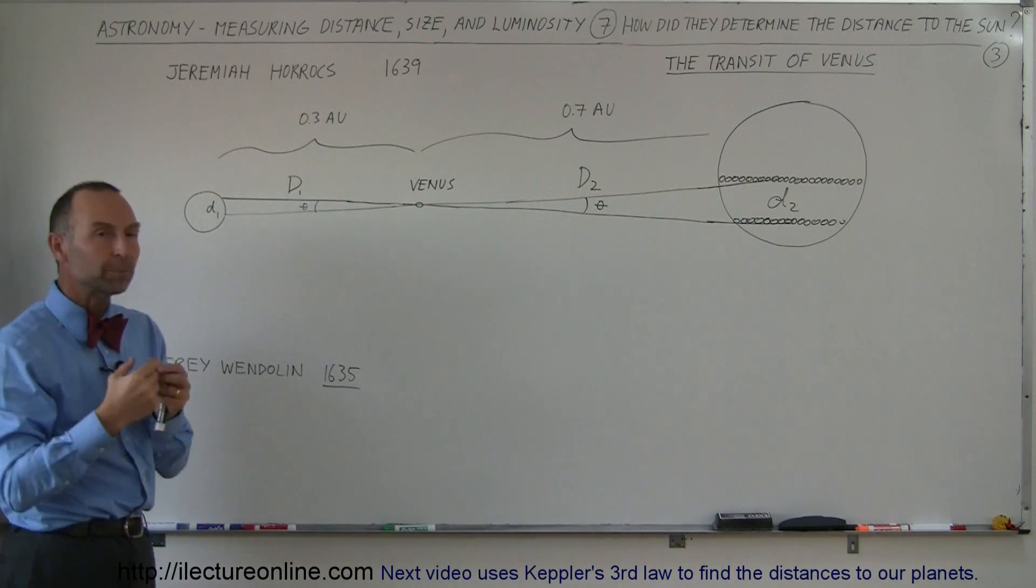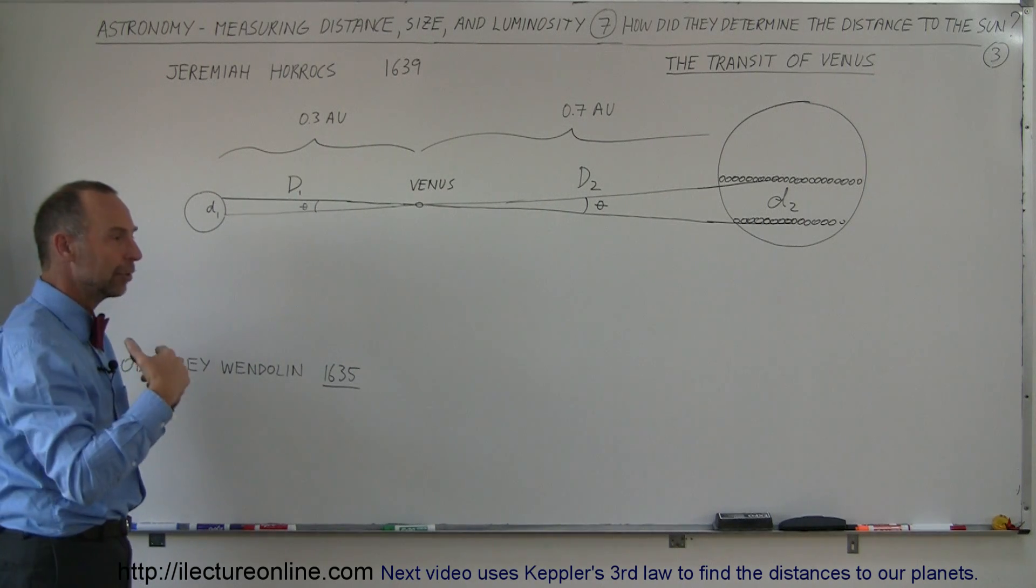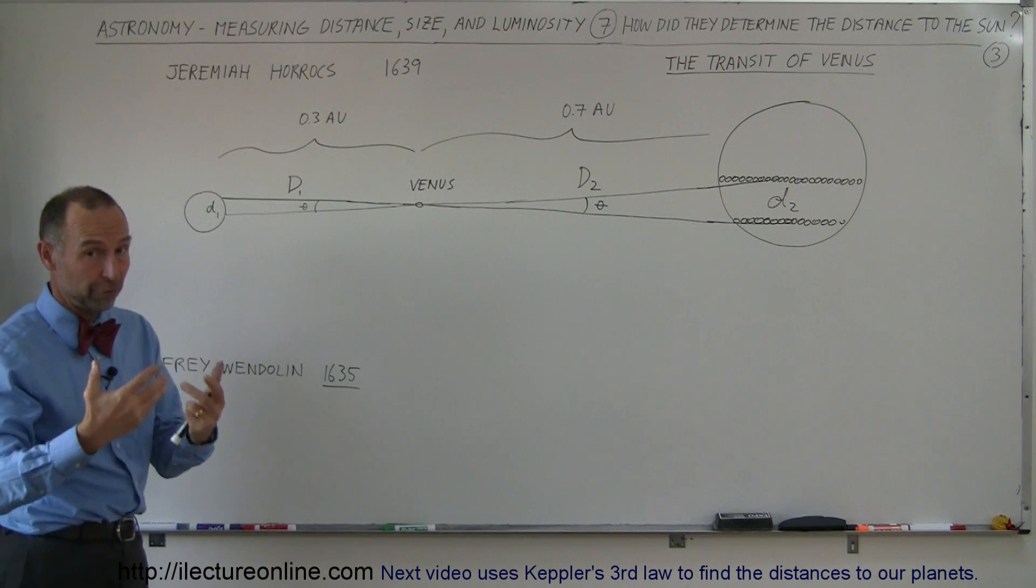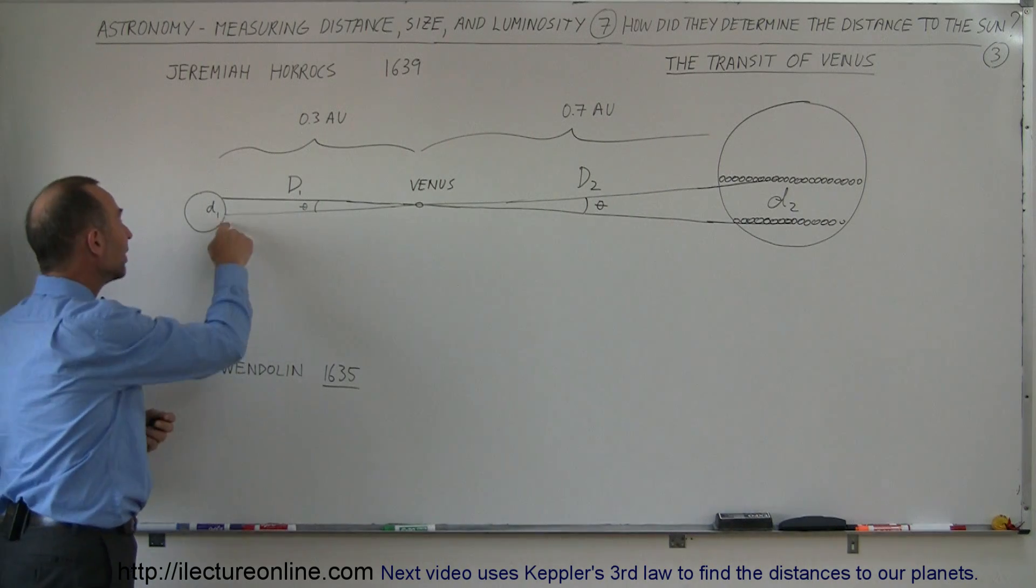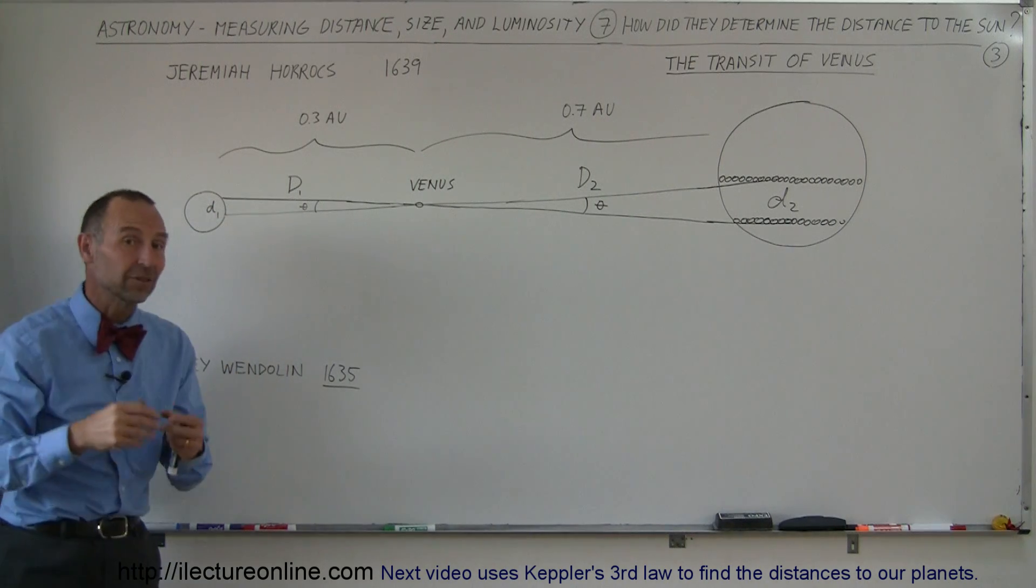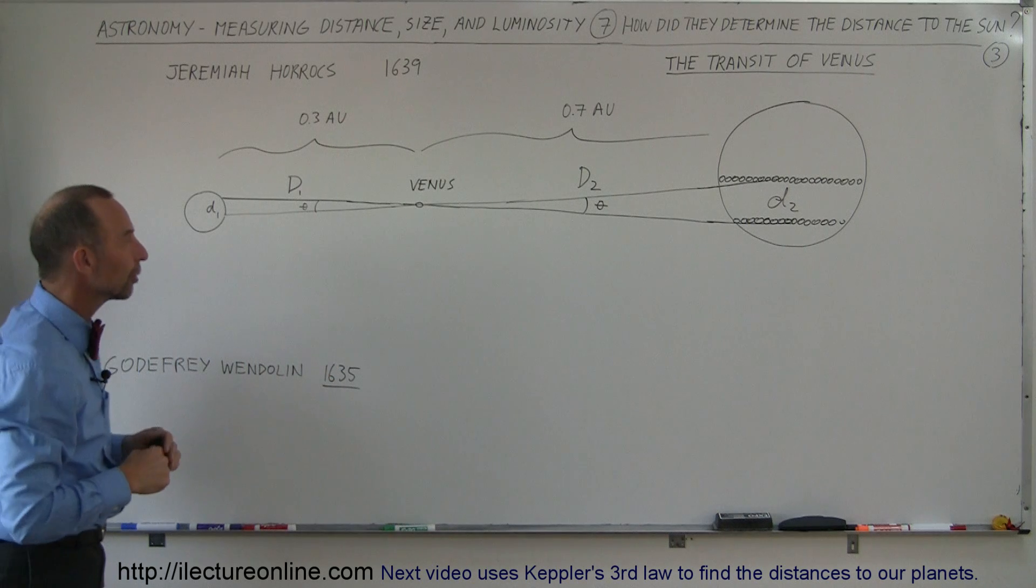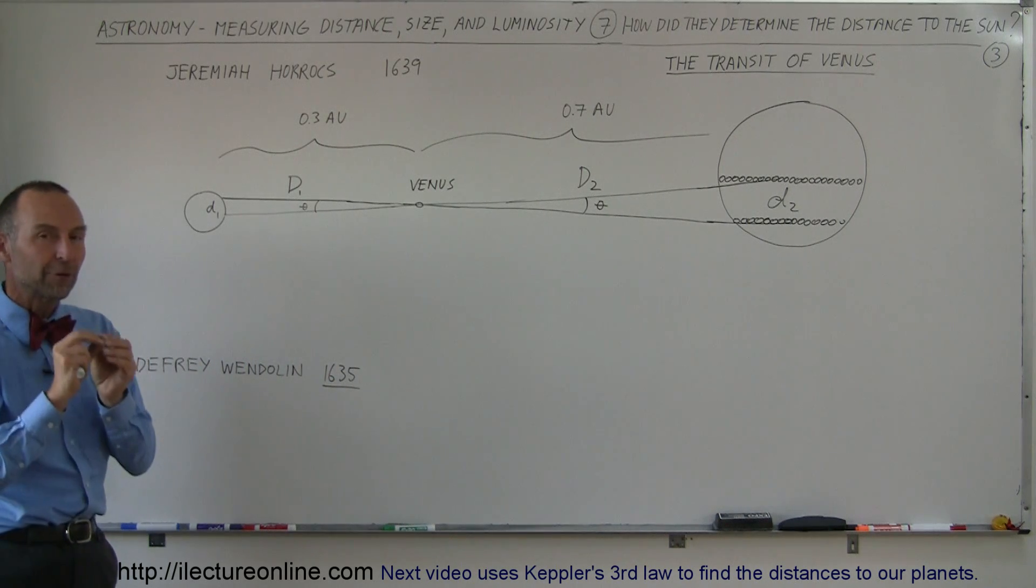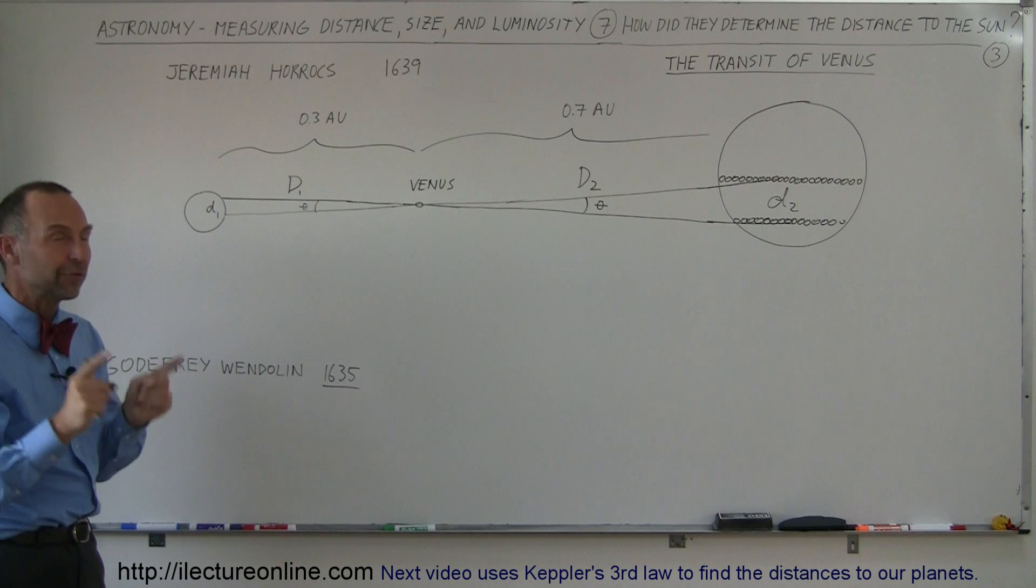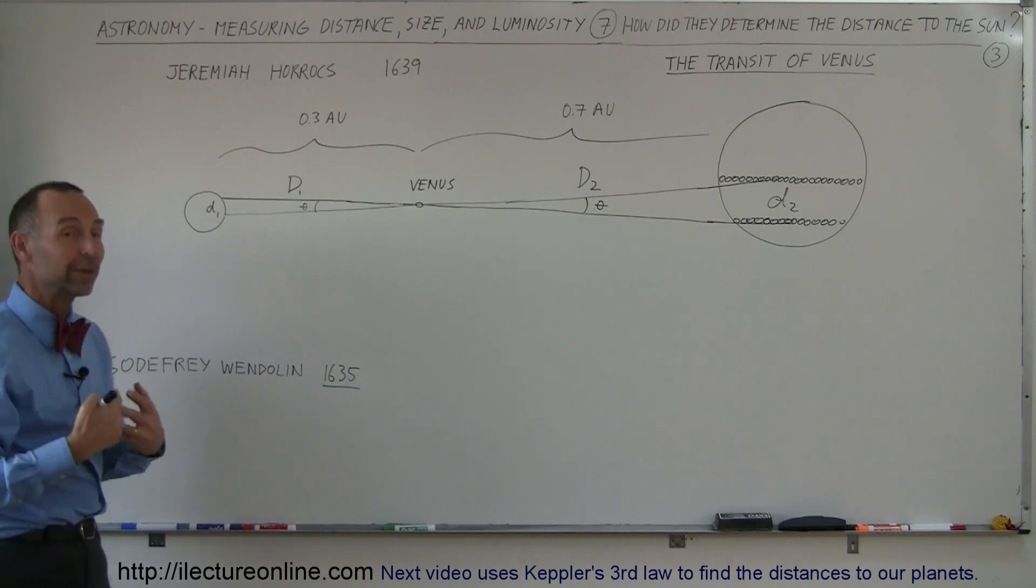He figured out if more than one person did it, at least two people or preferably more than two people, living in different places on the Earth or traveling to those different places and then witnessing the transit of Venus from those locations, he would be able to figure out the distance to the sun. So that's what they did.